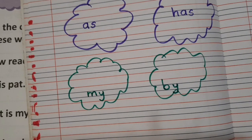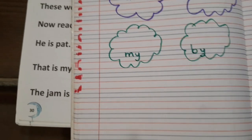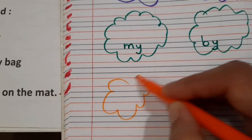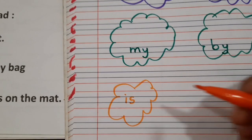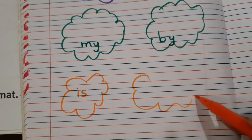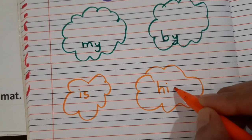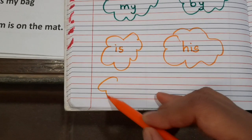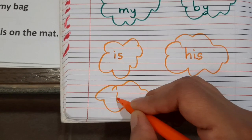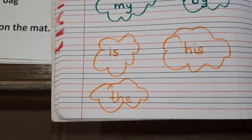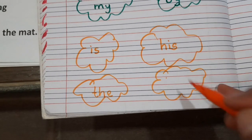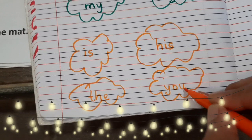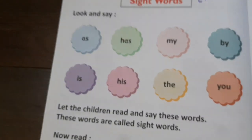Similarly, we will be writing another word: is — I-S. The next word is his — H-I-S. The next word is the — T-H-E. And the last sight word is you — Y-O-U.